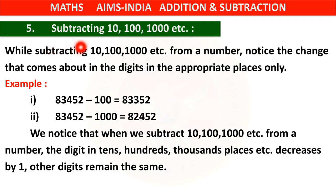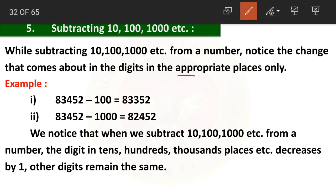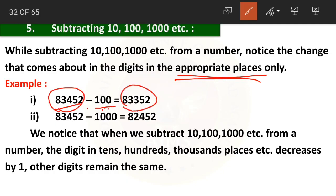Property number 5: subtracting 10, 100, 1000, etc. While subtracting 10, 100, 1000, etc. from a number, notice the change that comes about in the digits in the appropriate places only. For example, from a given number I am subtracting 100 — the only change that comes is in the hundreds place only. We are subtracting 100, so 4 minus 1 equals three hundreds.